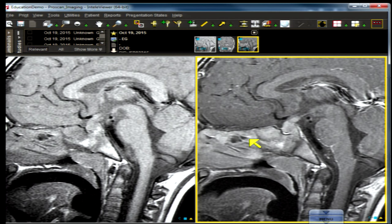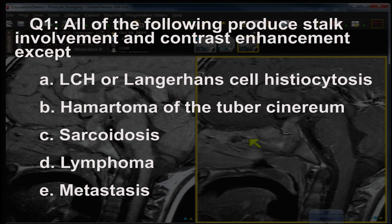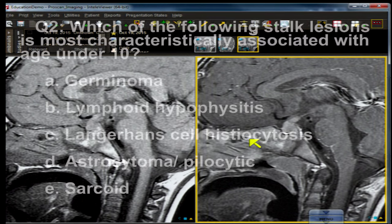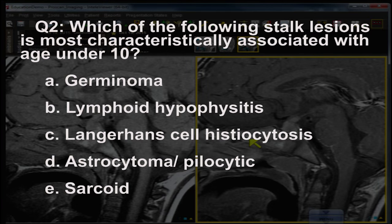Question number one: all of the following produce stalk involvement and contrast enhancement except — A) LCH or Langerhans cell histiocytosis, B) hamartoma of the tuber cinereum, C) sarcoidosis, D) lymphoma, E) metastasis.